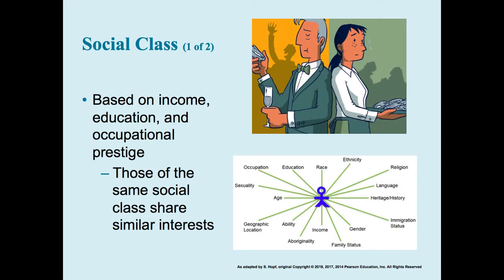Social class is generally based on things like income, education, and educational prestige — those are the main components, though not all of them. Often, people in a specific class will share similar interests. Our social class is probably the most important self-identity most people have, and it will also determine how the rest of society views a person.